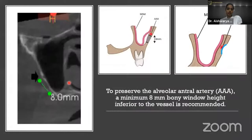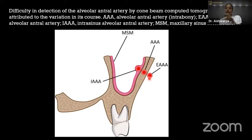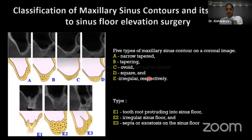It is recommended to preserve the alveolar antral artery by creating the bony window at least 8 mm below this artery. You can see this artery on radiograph. It is sometimes difficult to detect on CBCT. There are three types: intra-bony (intraosseous) or extra-osseous. You must carefully study your CBCT to check where the alveolar antral artery is located before planning surgery.